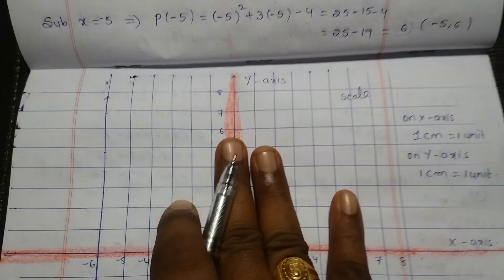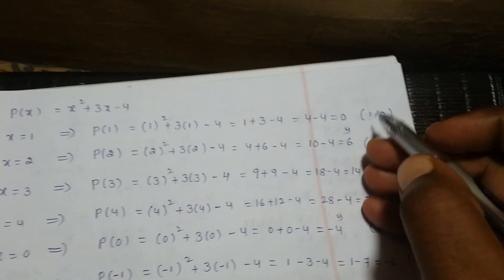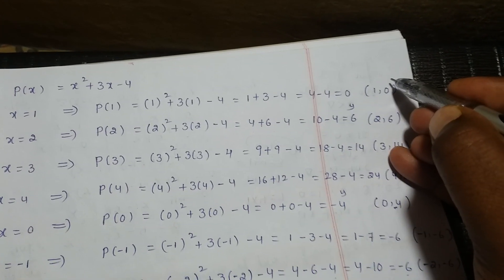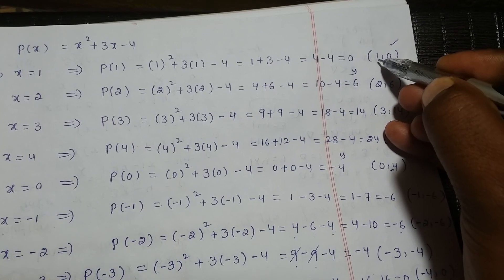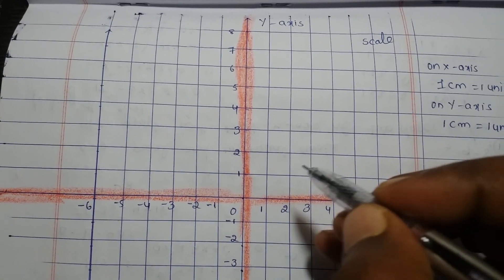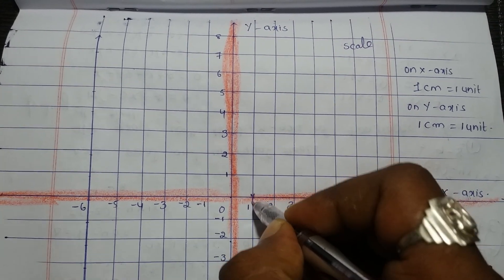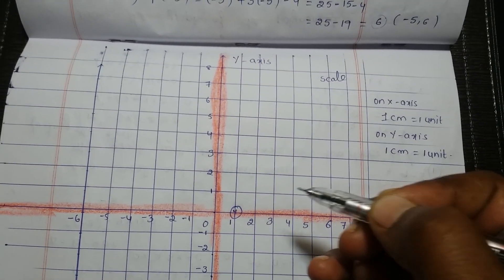Now mark all these points on a graph sheet. The first point is 1 comma 0: on x it is 1, on y it is 0. This is 1 comma 0. Next is 2 comma 6.